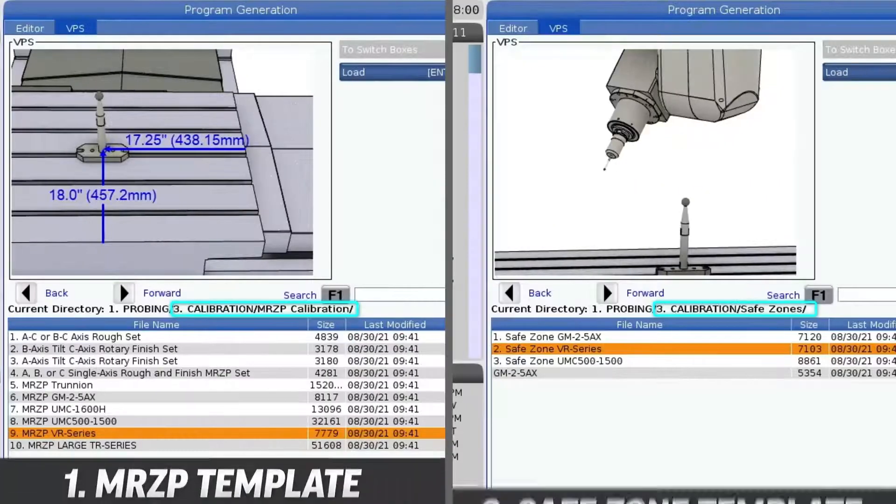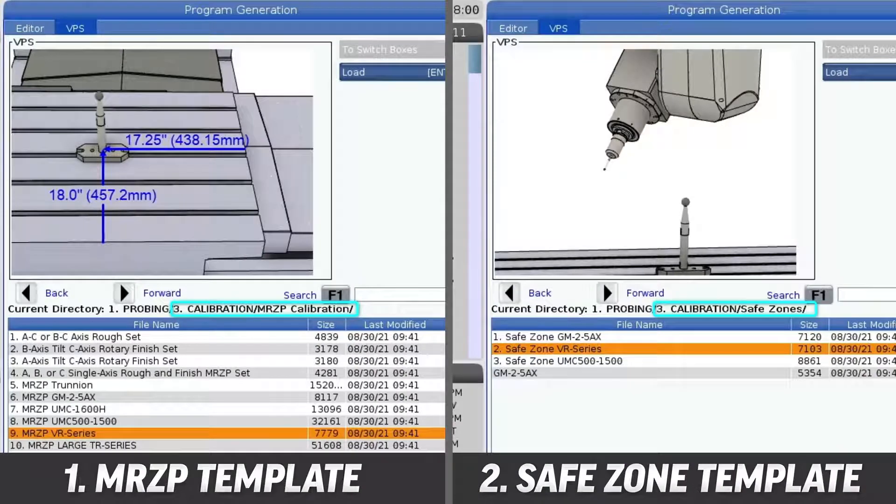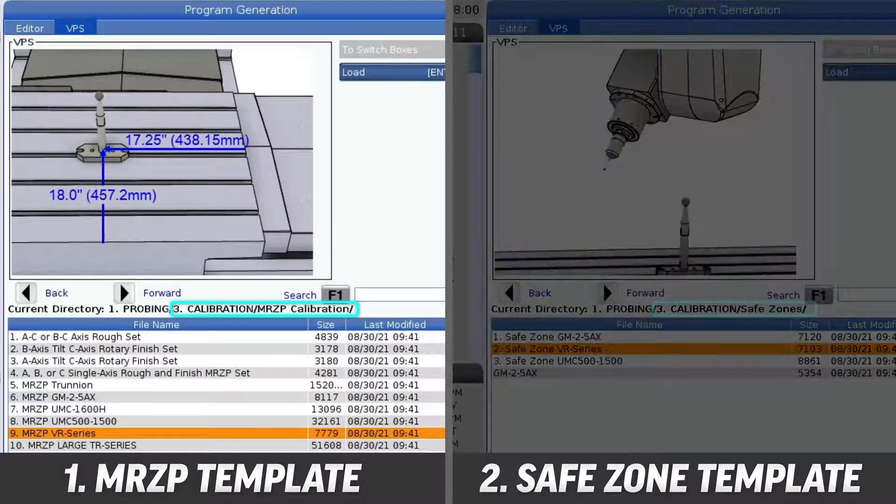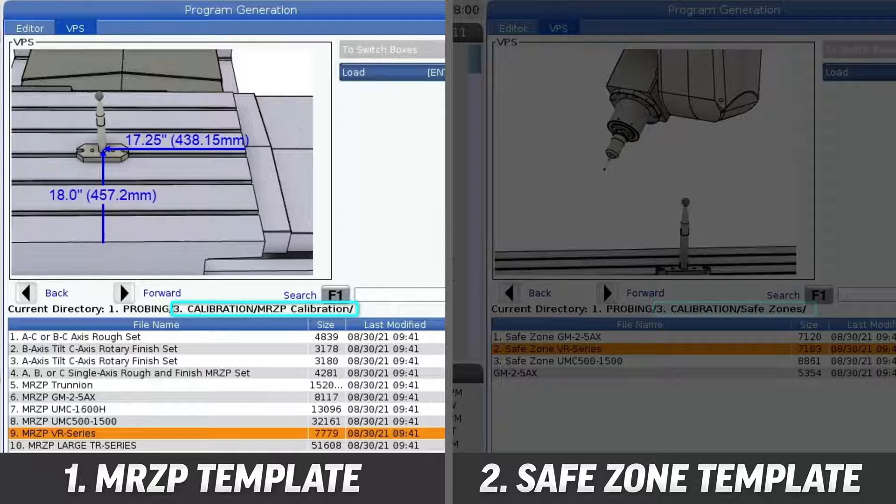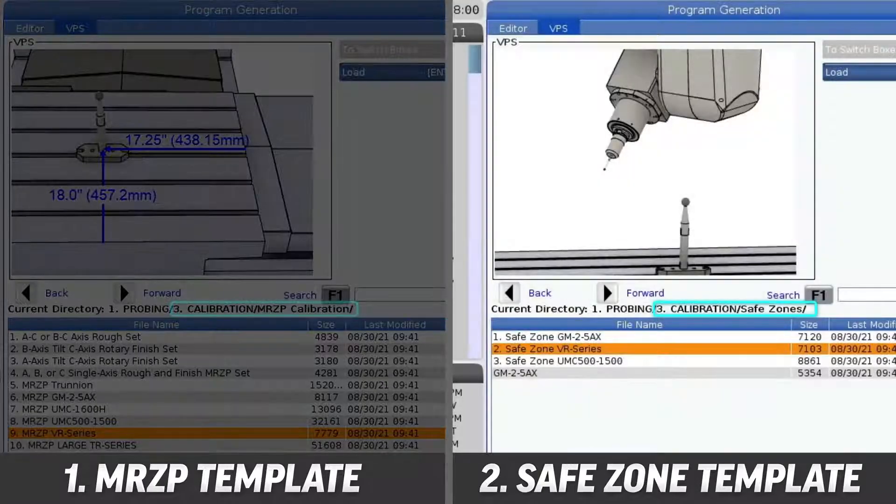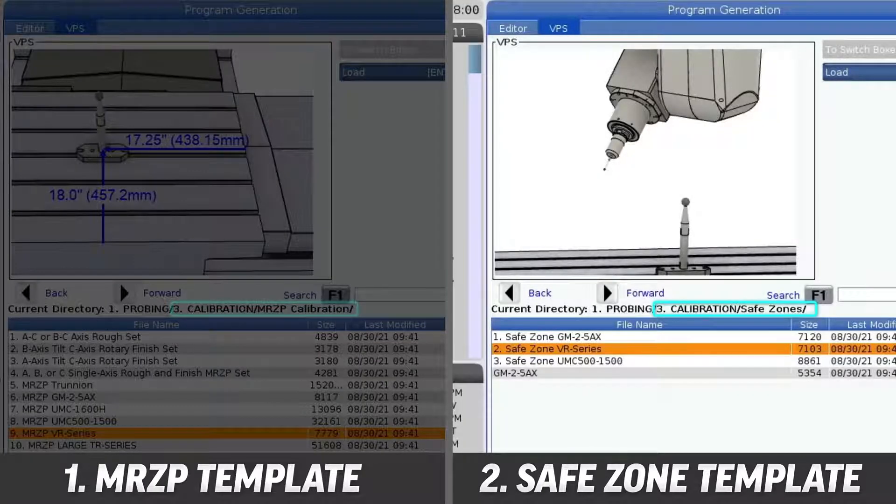There are two separate VPS templates that need to be run. The first is to set the machine rotary zero points, or MRZP for short, and the other is to calibrate the safe zone position in relation to the machine table.